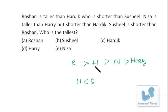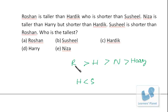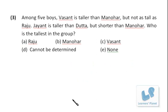Sushil is shorter than Roshan. We have two relationships: Hardik is shorter than Roshan and Hardik is shorter than Sushil. But we're given that Sushil is shorter than Roshan, which means Roshan is the tallest. We can see the full sequence — Roshan is the tallest.